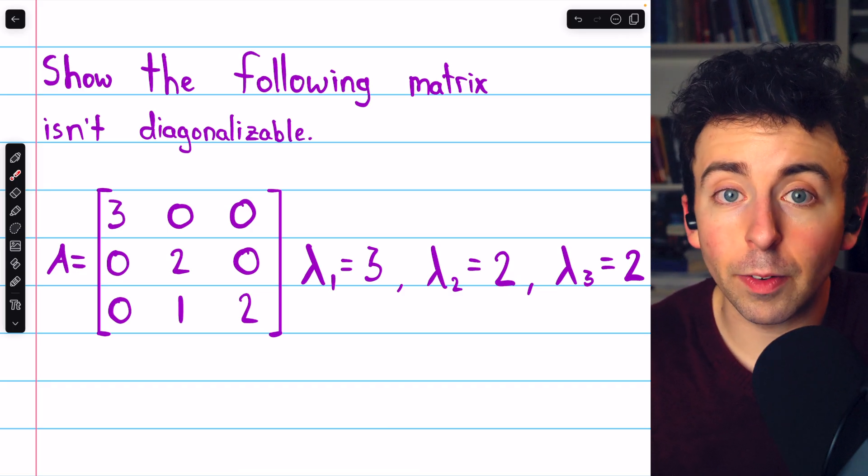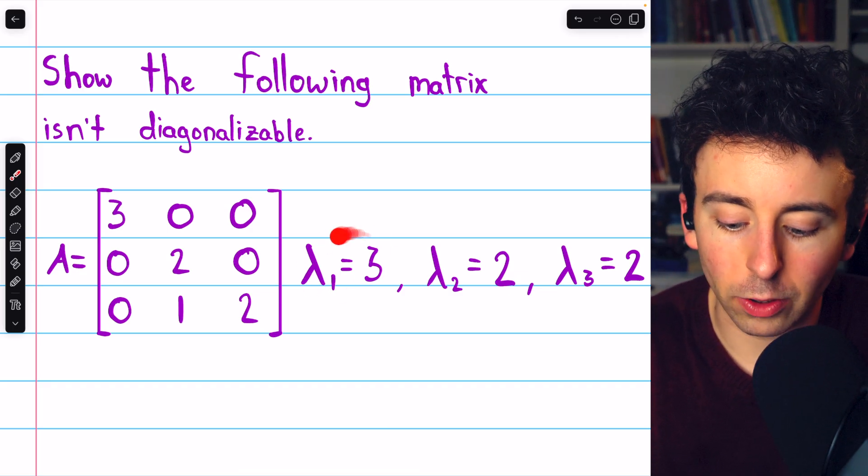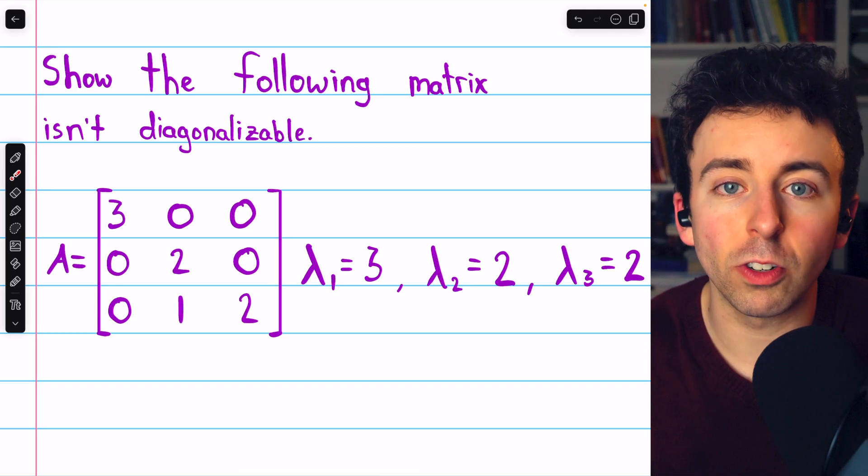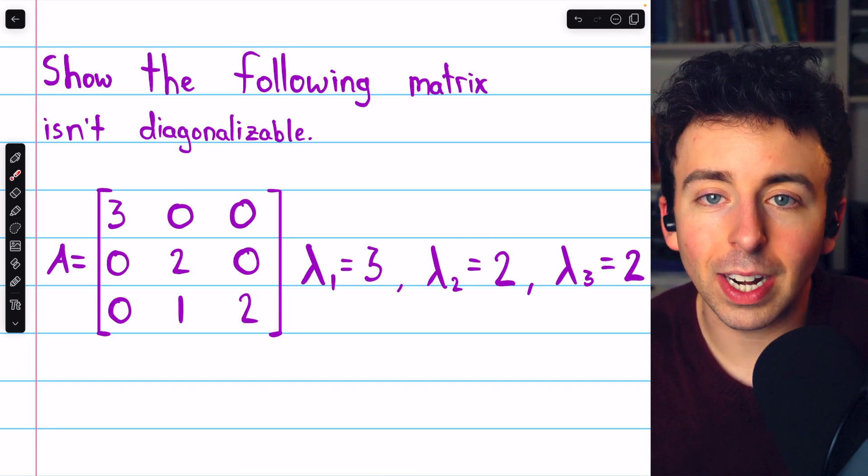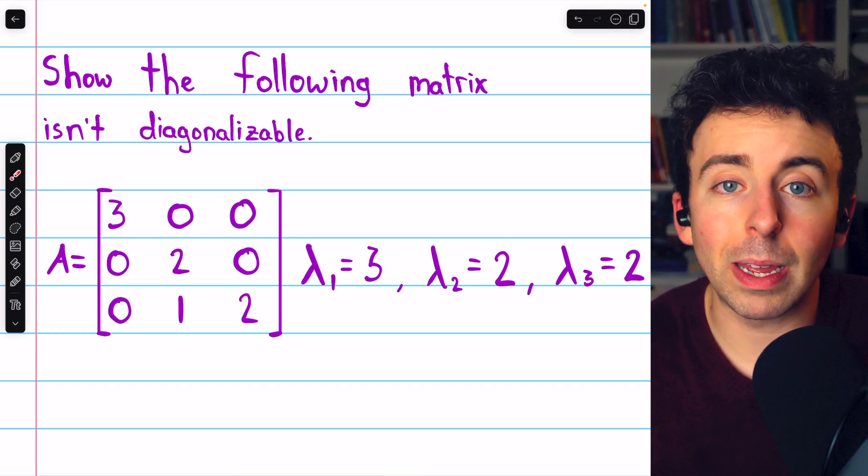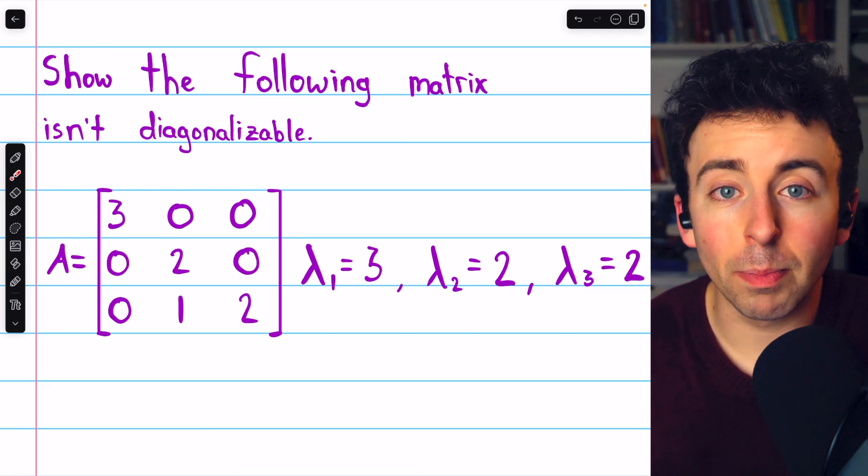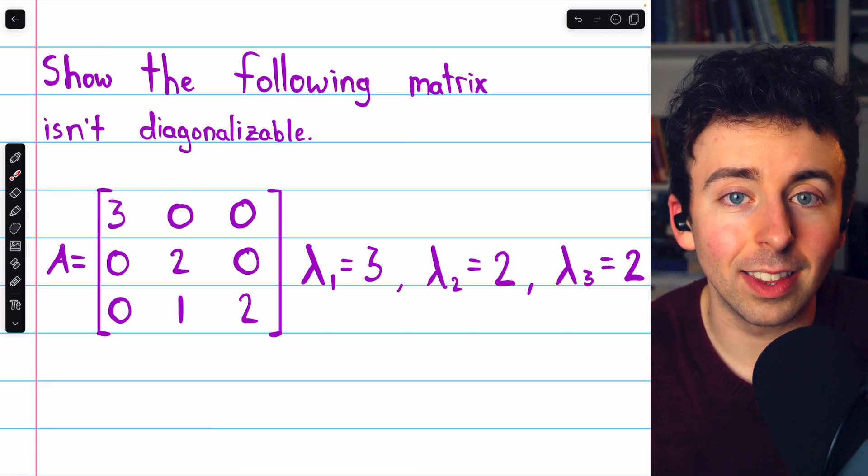But it's certainly possible in a different example that this eigenvalue could have an eigenspace of dimension 2 and this eigenvalue could have an eigenspace of dimension 1, and so the matrix would still be diagonalizable. But let's see why that's not the case in this example.